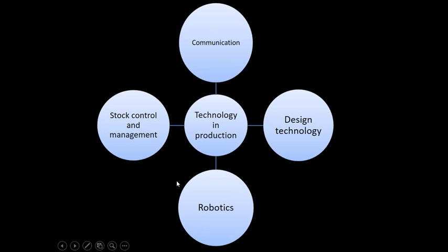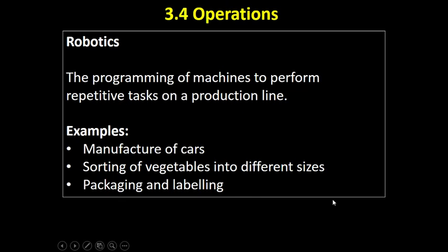There are various different types of technology that may be used in production, from the design of products, to producing them with robotics, to managing inventory and stock, and communication with various stakeholders. Robotics is the programming of machines to perform repetitive tasks on a production line — jobs that may have been done by humans in the past are often able to be automated.